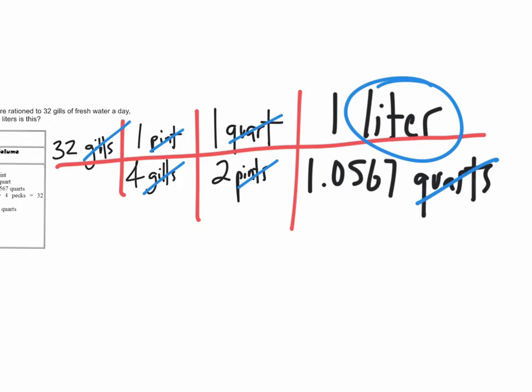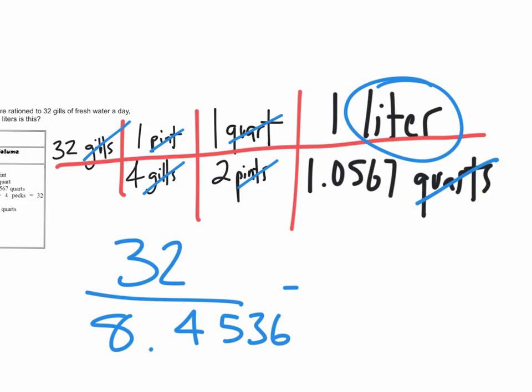And so now when we multiply across the top, I can see that 32 times 1 times 1 times 1 is going to give us simply 32. And what about the bottom? Now we need to make sure that we multiply 4 times 2 times 1.0567. And when you do that, you're going to get 8.4536. Next, you're going to need to divide 32 by 8.4536. And you're going to get 3.78 liters. Don't forget the liters.